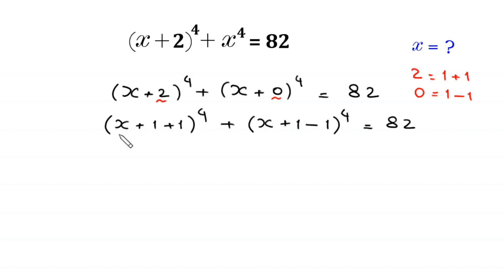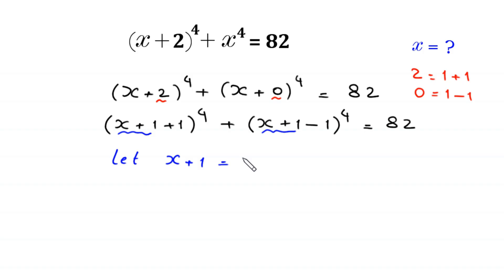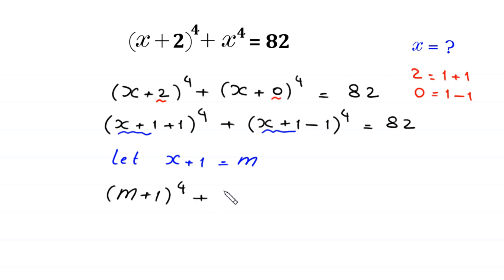Here we have x+1 in both terms. So we let x+1 = m and substitute m into the equation. The equation becomes (m+1)⁴ + (m-1)⁴ = 82.